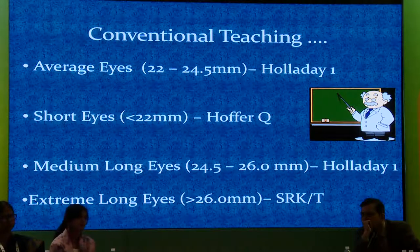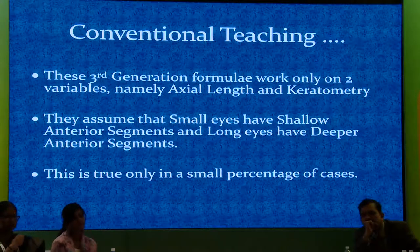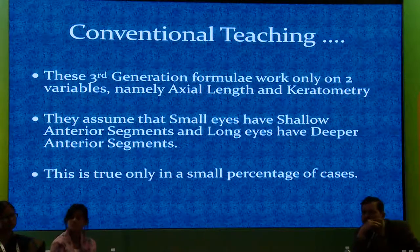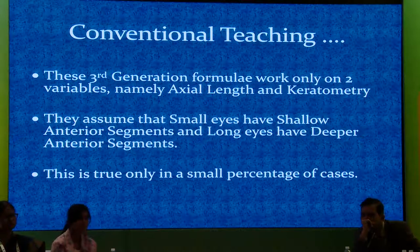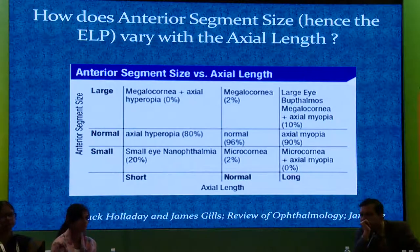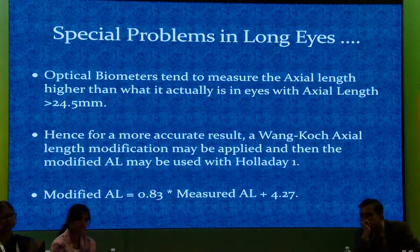Up till now we've been taught that for average eyes of 22 to 24.5, use Holladay 1; short eyes use Hoffer Q; medium eyes use Holladay 1; and extreme long eyes, SRK-T. But third-generation formulas with only two variables — axial length and keratometry — are no longer adequate. We assume that in a short eye the anterior chamber is shallow and in a long eye it is deep, but that's not really true. This affects your predicted lens position and will completely change your end result, since anterior chamber size and axial length will determine where your IOL is placed.